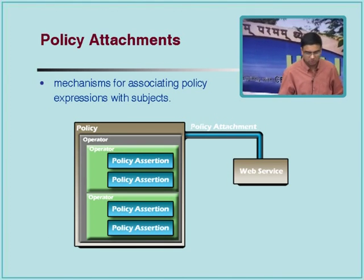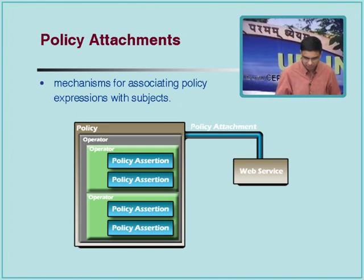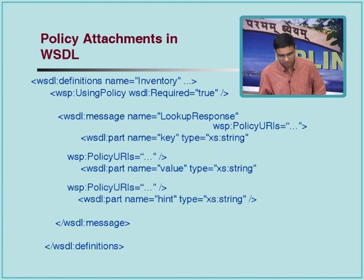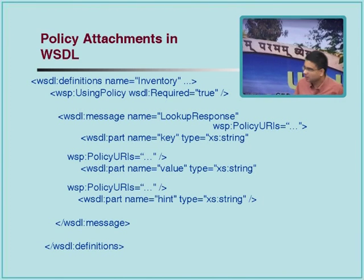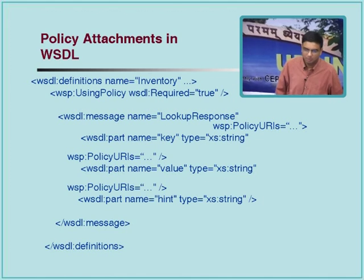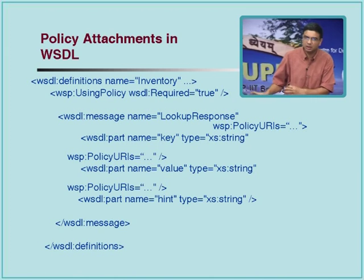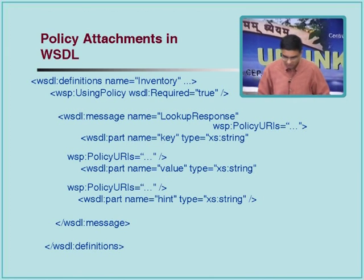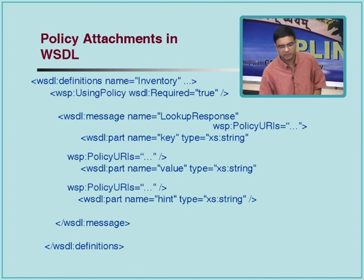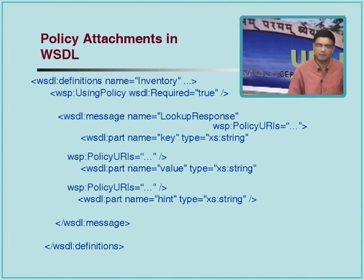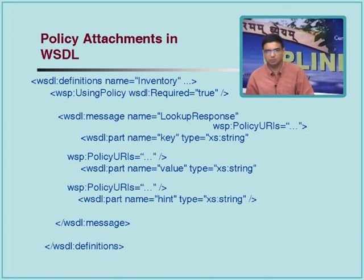Attachment is the notion of simply associating the policy with some subject — a web service in our case. This is how you do it in WSDL. Everything is a URI. In WSDL there is no notion of T-model — that's a UDDI concept. So I will say that this lookup response message is associated with some policy which can be found at this URI that I'm specifying here. The policy URI itself is specified separately, and when you hit that URI, the description of the policy will be available there.